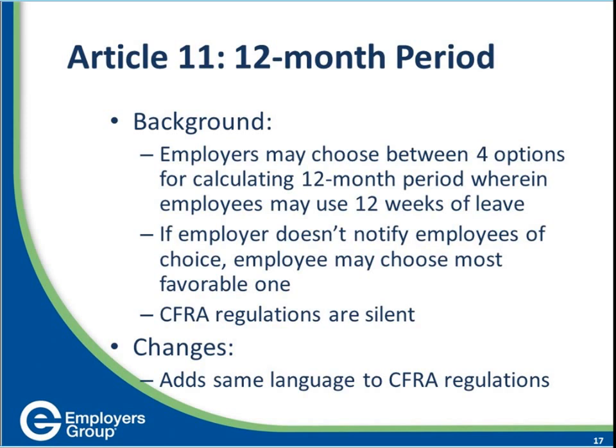The fourth option is a rolling 12-month period measured backward exactly one year every day — the window moves forward each day as the calendar progresses. Traditionally the CFRA regulations were silent on these calculation methods, but employers have always followed these four FMLA options. The new language not only adds these four methods but also clarifies that if you do not designate in writing the method your company will use to calculate the 12 weeks in a 12-month period, the employee is entitled to elect the method most favorable to them.